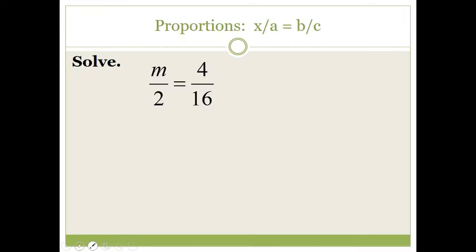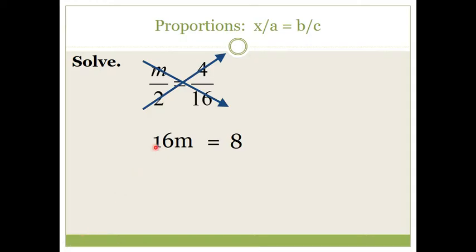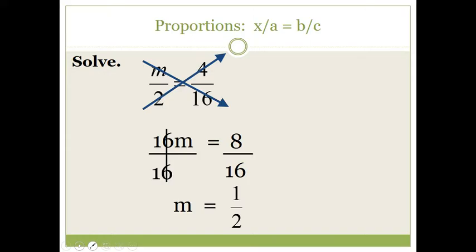One last example: m times sixteen is sixteen m, and we set that equal to two times four, which is eight. We get m by itself by dividing both sides by sixteen, giving us m equals eight over sixteen, which reduces to the fraction one-half. So m can be a fraction or a decimal.